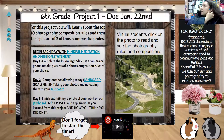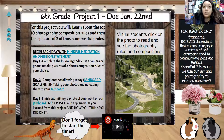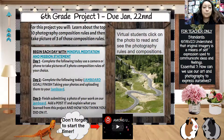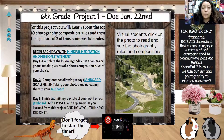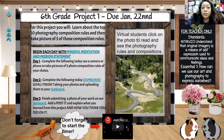Last semester it was actually photography and art, but we're just doing half a semester of art. Now we're going to move on to photography. The explanation for this project: you will learn about the photography composition rules and then take a picture of three of those composition rules. Virtual students, click on the photo to read and see the photography rules and composition.